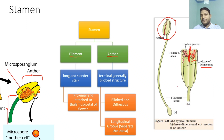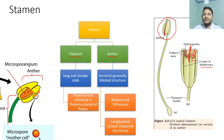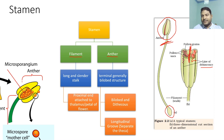When the anthers are matured, the anther is connected to the filament at the proximal end. The filament's proximal end is attached to the thalamus or the petal of the flower. And the distal end is attached to the anther.